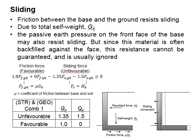Sliding of a retaining wall refers to the horizontal movement of the retaining wall due to active pressure. It relies on the friction between the base and the ground to resist sliding, and this frictional force is very dependent on the self-weight load.